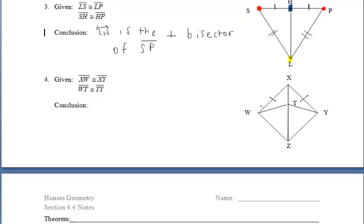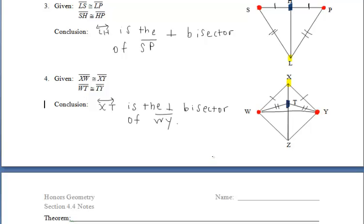Let's fill in our tick marks on the fourth and final example. One thing to notice is we have two points equidistant from the endpoints W and Y, but we need to draw in segment WY since it's not there to begin with — and in a proof, you would have to add that as a step. We have point X equidistant from W and Y, and point T equidistant from those same two points, which means X and T determine the perpendicular bisector of segment WY.